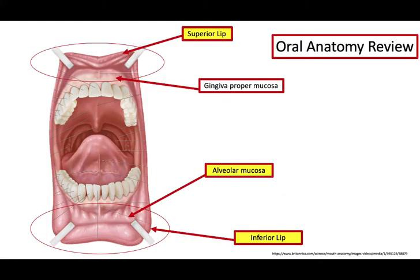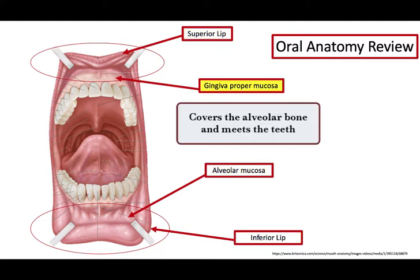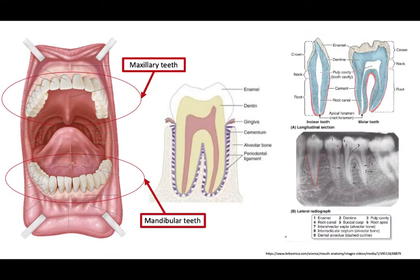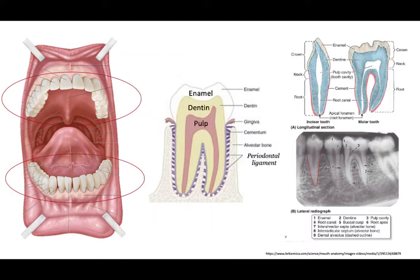As we look into the mouth with the tongue raised, we initially encounter the lips, gingiva, and alveolar mucosa. The gingiva proper covers the alveolar bone and meets the teeth. The alveolar mucosa is the unattached area of the gums that is shiny and red when healthy. The teeth are fixed in the alveolar bone located in the maxillary and mandibular bones of the jaw. They are covered on the outside by enamel, the hard protective layer strengthened by fluoride. Underneath the enamel is dentin, a soft area prone to decay. The most interior layer is the pulp, which contains the nerves and blood supply of the tooth. The tooth root is fixed to the surrounding bone via connective tissue called the periodontal ligament.